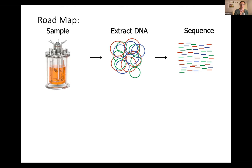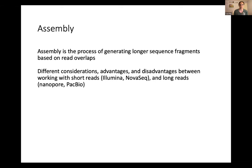This sequencing can be done in two different ways. There are long read sequencers that we're going to talk about a little bit, but the majority of microbial metagenomic sequencing data right now is still shorter reads, often Illumina sequencing. These little fragments are typically 150 to 300 base pairs long. Our first step here is to think about assembly, which is the process of generating longer sequence fragments based on read overlaps.